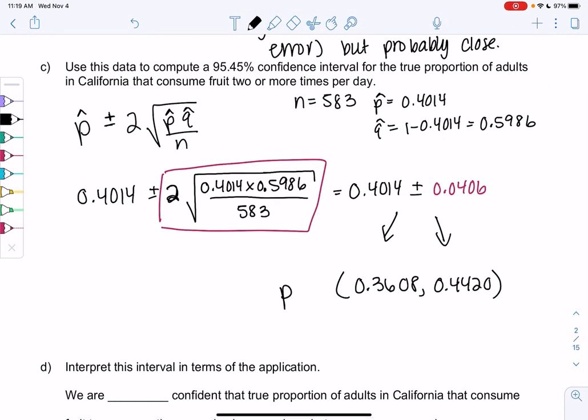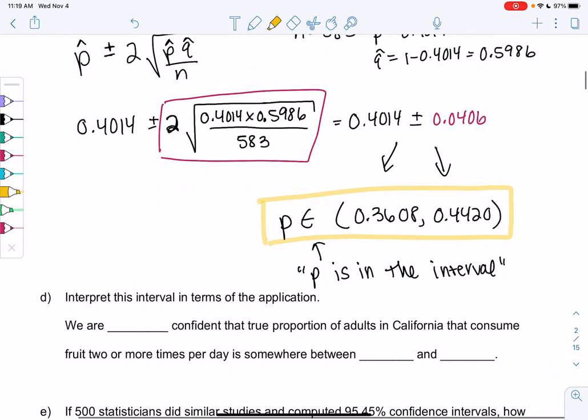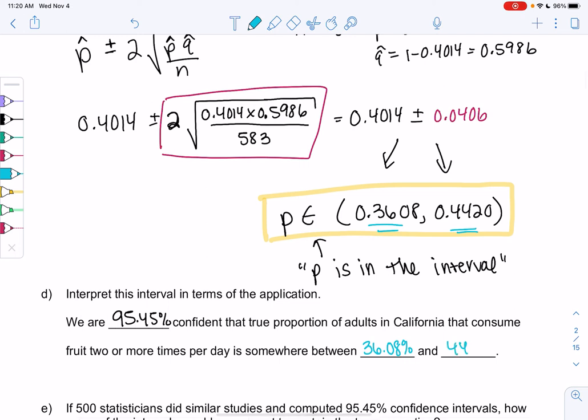The notation is we're going to put a P and this little fancy E. That's basically saying P is in the interval in math notation. So P is in the interval of 0.3608 to 0.4420. And let's interpret. Interpreting is probably one of the most important things we need from this class. We're 95.45% confident that the true proportion of adults in California that consume fruit two or more times per day is somewhere between 36.08% and 44.20%. For math, I like to leave them in proportion form, but often in sentences, I like to switch them to percents. It's just easier to understand.